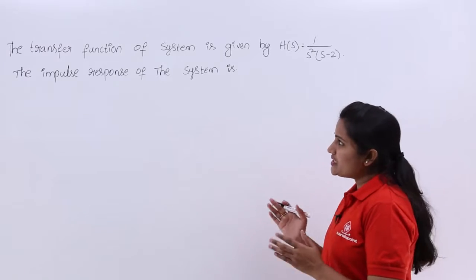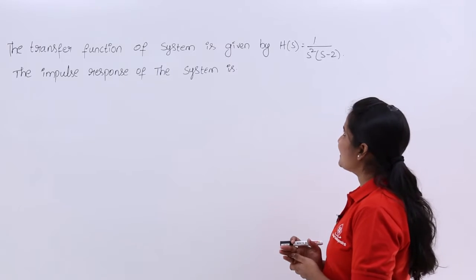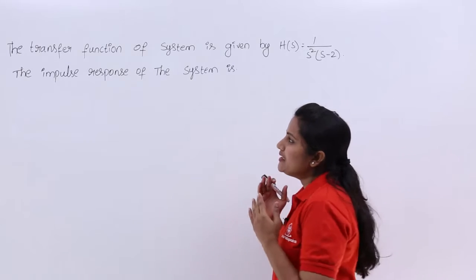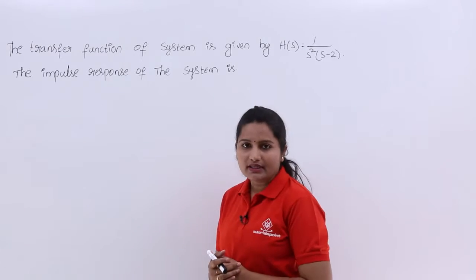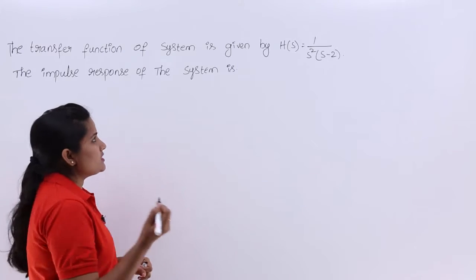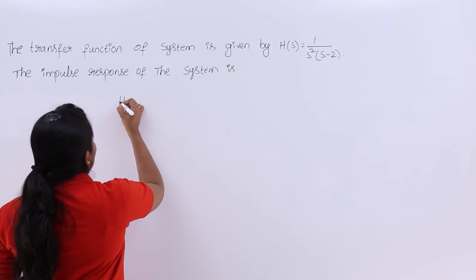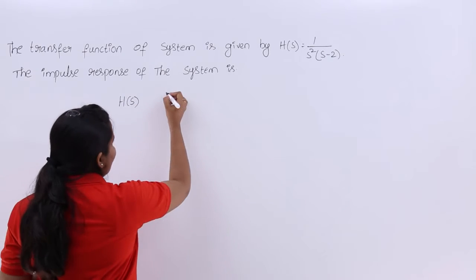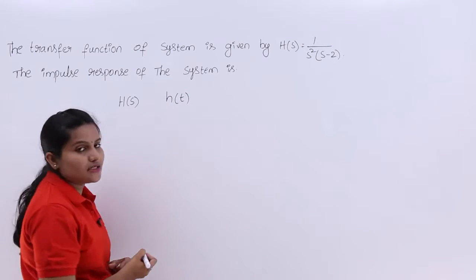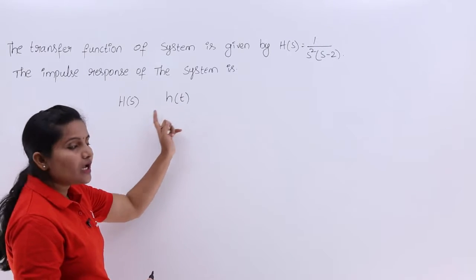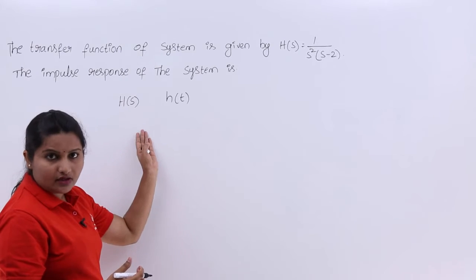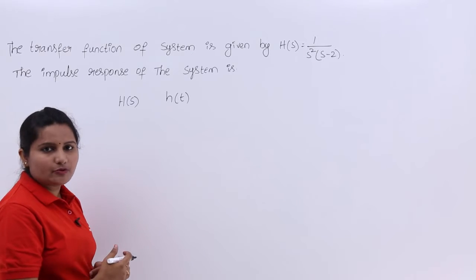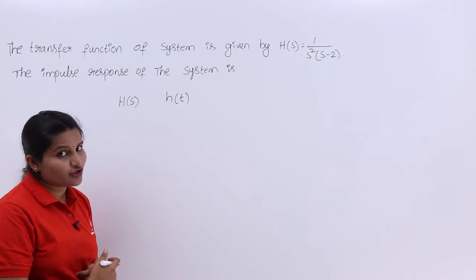Observe the problem here. The transfer function of the system is given by h(s) = 1 / (s² · (s - 2)). The impulse response of the system is what we need to find out. Impulse response is nothing but h(t). How can we find h(t) if the transfer function of the system is given? We know the relation between impulse response and transfer function of the system.